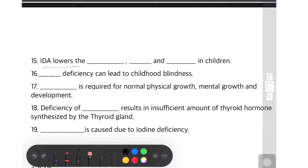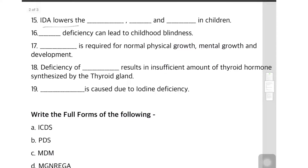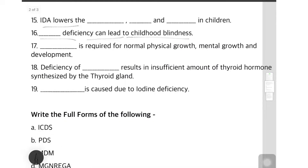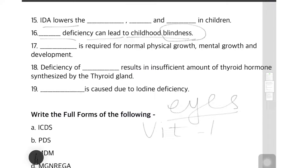Question 16: dash deficiency can lead to childhood blindness. Vitamin A is always related to blindness — eyes, eyes, eyes means blindness. So the answer is Vitamin A deficiency.